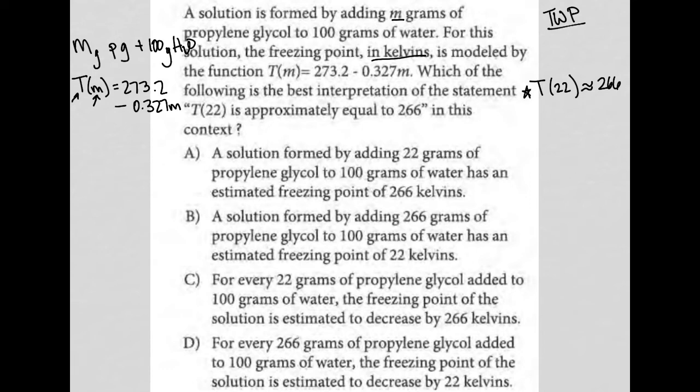based upon what we've already read, when I see this statement as is, and based upon what we know about this equation, what we know about the M value, it looks like it's saying if we have 22 grams of PG in this solution that's formed by adding M grams of PG, then the freezing point temperature, this T of 22, the freezing point temperature in Kelvins should be 266.